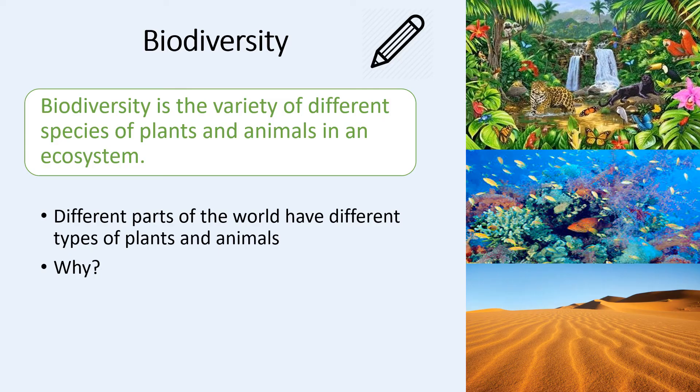We need a range of species so that we can survive — the more species there are, the more resources that are available to us. The range or variety of the different species in an ecosystem is called biodiversity. Biodiversity is the variety of different species of plants and animals in an ecosystem. To find the biodiversity you would count all of the species — so for example in the picture you'd count all of the different species that are present to find the biodiversity.